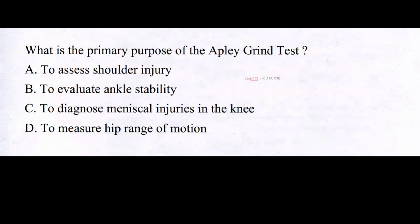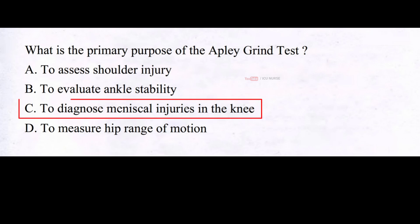What is the primary purpose of the Apley Grind test? A. To assess shoulder injury. B. To evaluate ankle stability. C. To diagnose meniscal injuries in the knee. D. To measure hip range of motion. And the correct answer is C: to diagnose meniscal injuries in the knee.